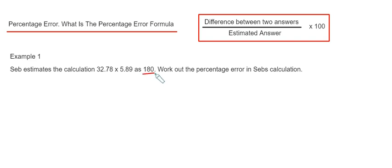What we have already is the estimated answer, and what we don't have is the real answer. So first of all, we need to work out 32.78 × 5.89. Get your calculator and work this out.